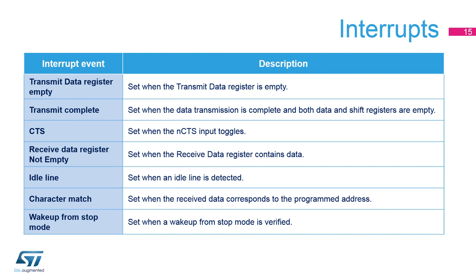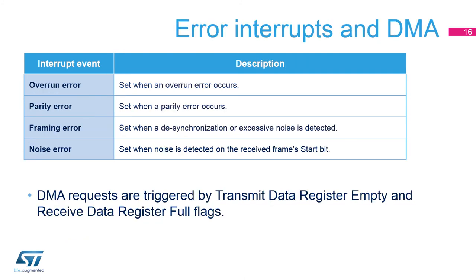The wake-up from stop mode flag is set when the wake-up event — start bit, address match, or any received data — is verified. Several error flags can also be generated by the LPUART, as shown in the table. The overrun, parity, and framing error flags are each set when the corresponding error occurs. The noise error flag is set when noise is detected on the received frame's start bit.